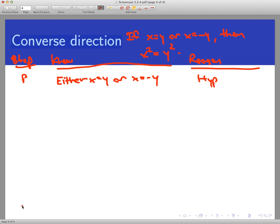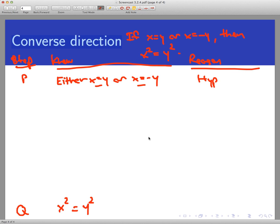Okay, and the conclusion here is going to be that x squared equals y squared. And we don't know, again, why that is true just yet. So let's think through where we want to head with this. I've assumed that either x is equal to y or x is equal to negative y. Where I'm headed is to say something about x squared. I want to say that x squared equals y squared. So let's start by just writing x squared.